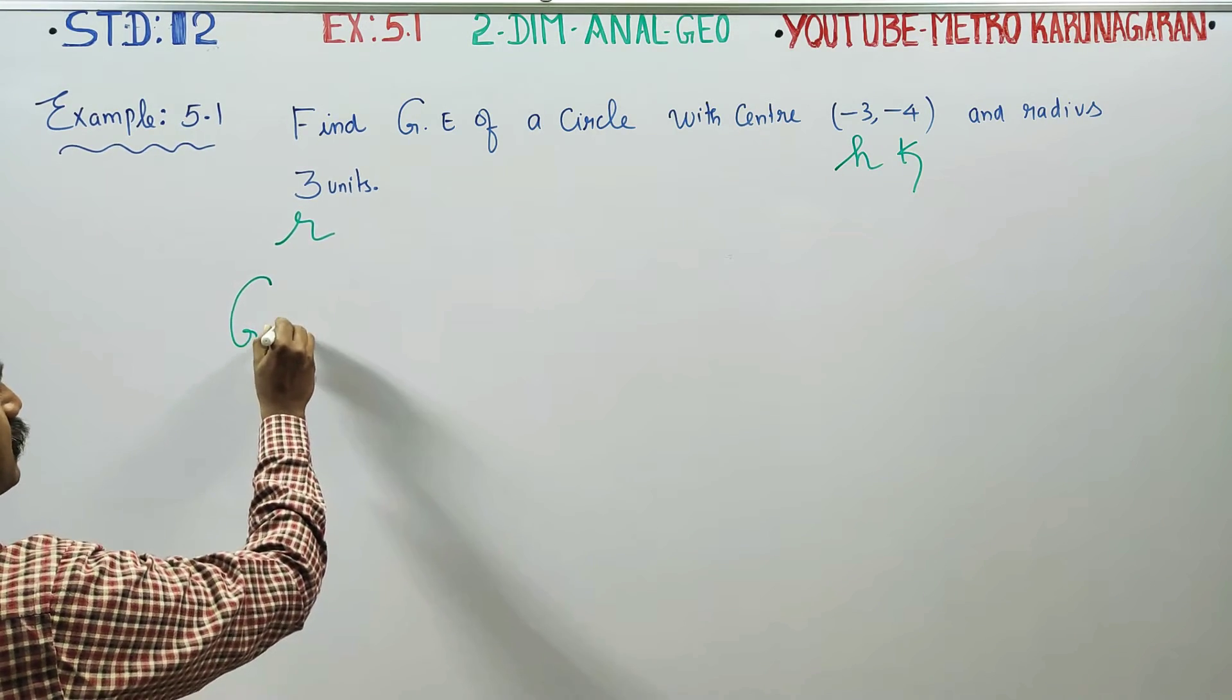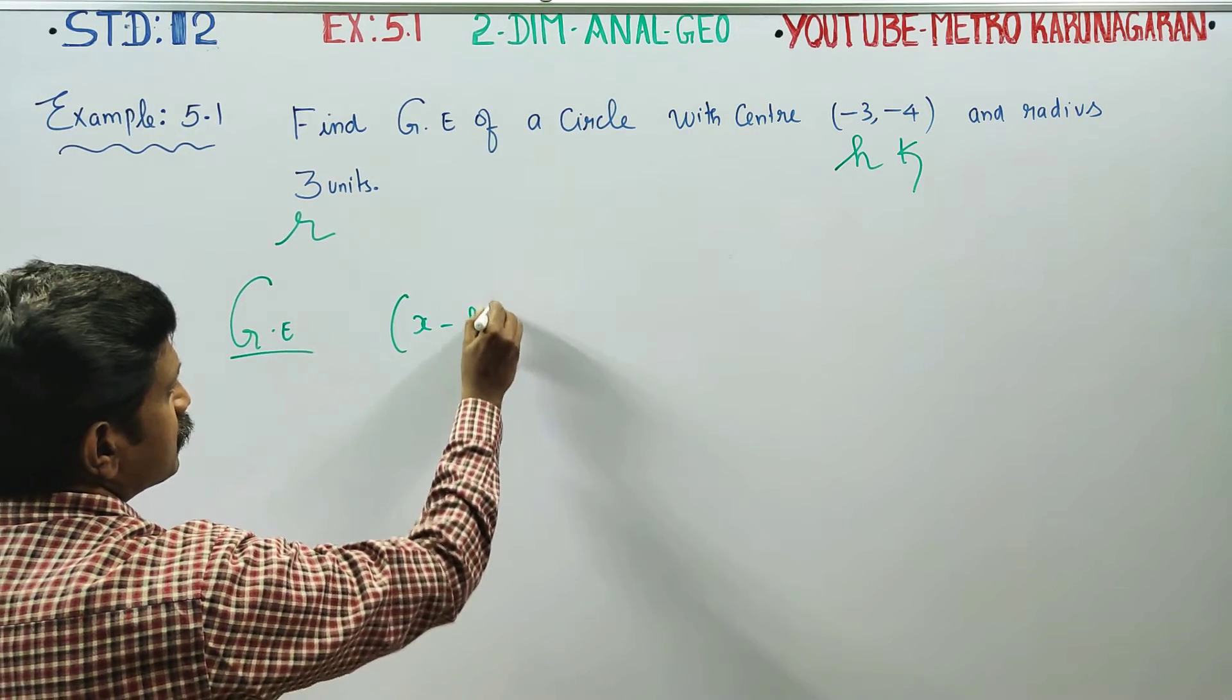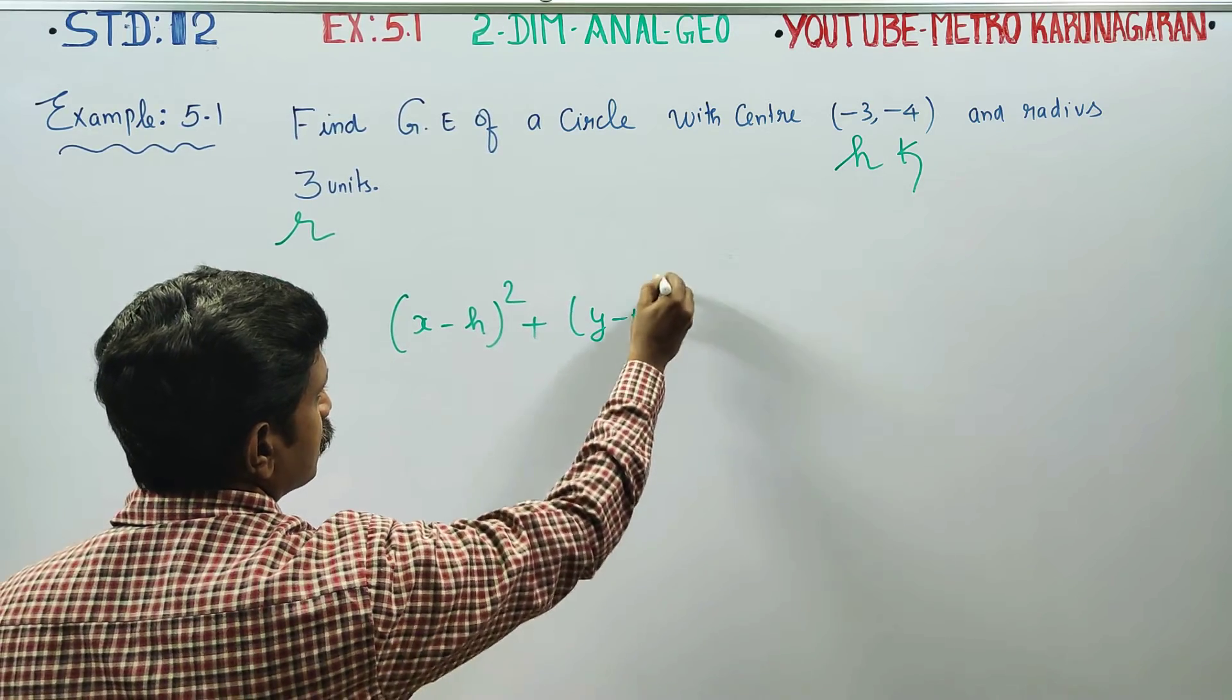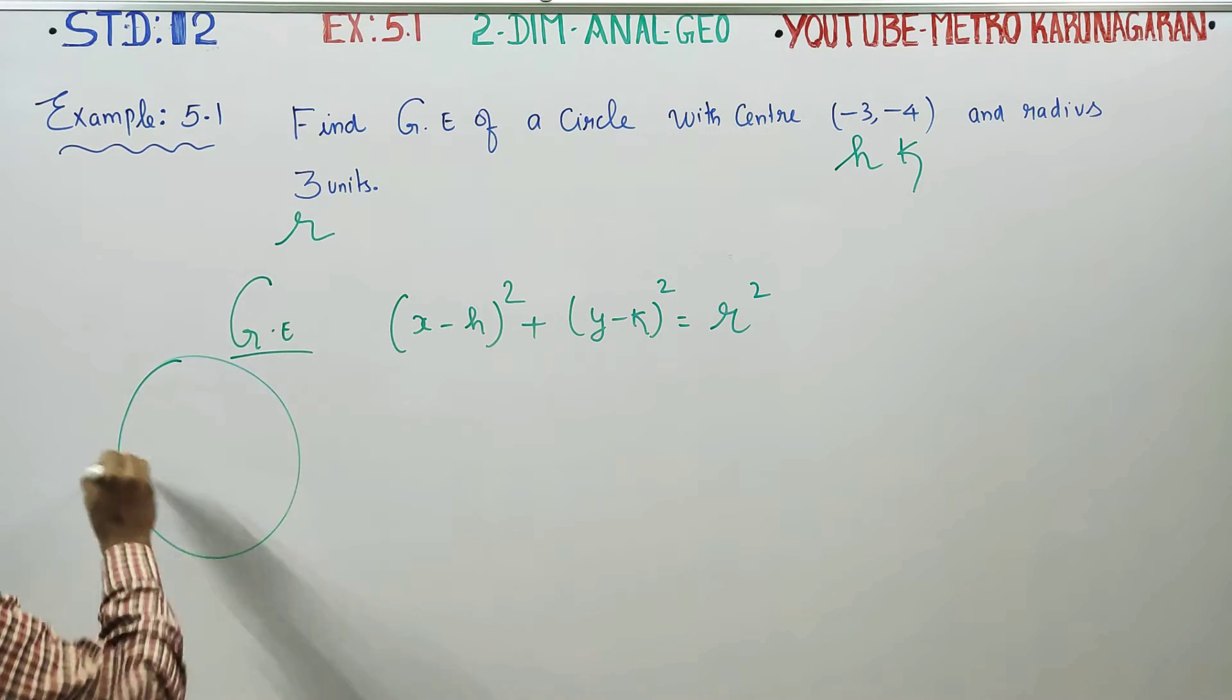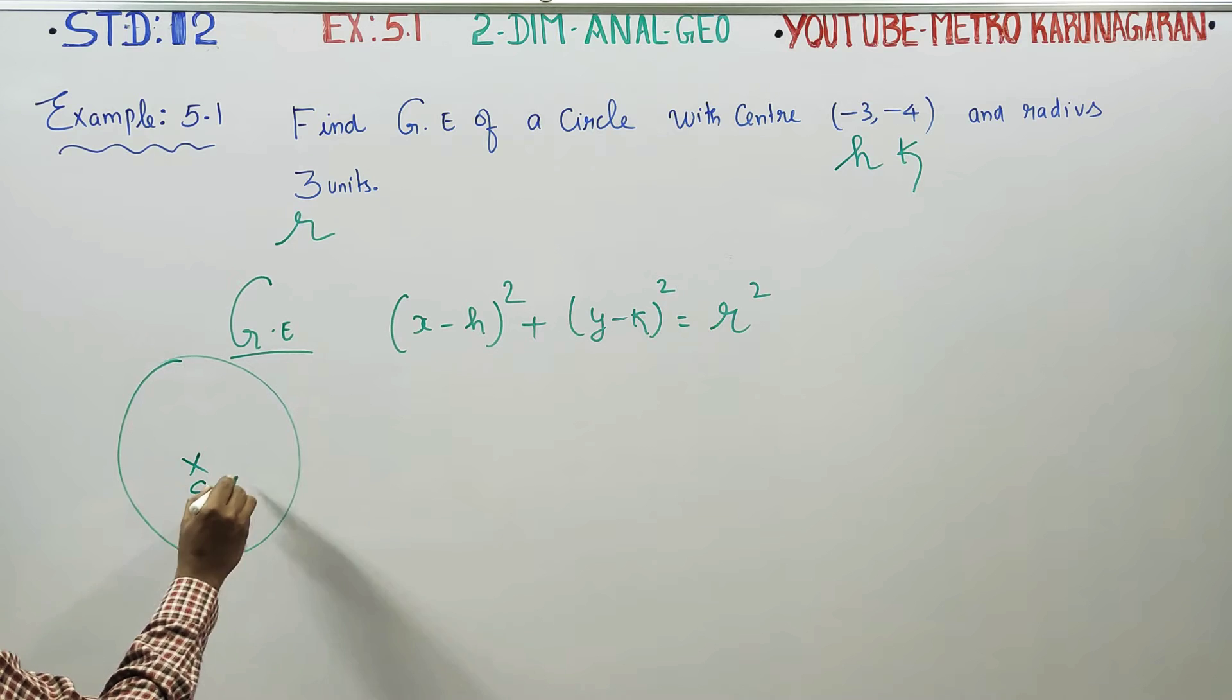General equation of the circle with center and radius is (x - h)² + (y - k)² = r². This formula is for the center and radius form.